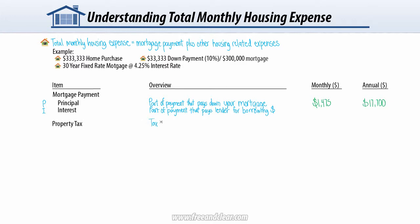The next component is property tax. Most states charge a tax when you own a property. Property taxes are typically collected twice a year, although depending on your lender and mortgage program, you may be required to pay property tax on a monthly basis into a special account called an impound account, controlled by the lender, from which your taxes and other expenses are paid when due. Property taxes vary by county and can range from 0.5% to 3% of the value of the property. In this example, our property tax rate is 1%, so approximately $280 per month, or $3,333 per year.